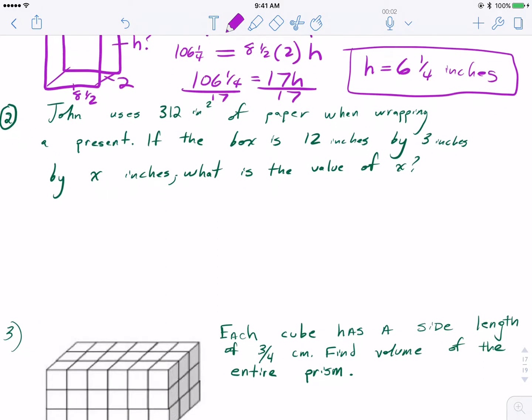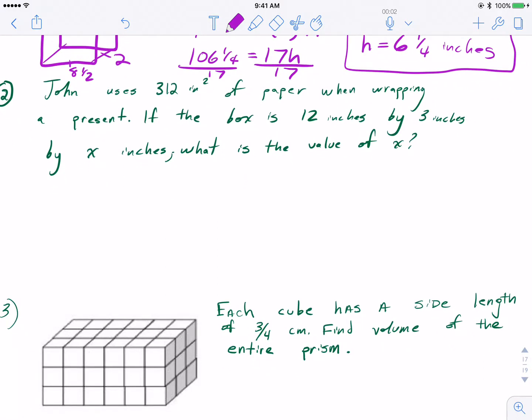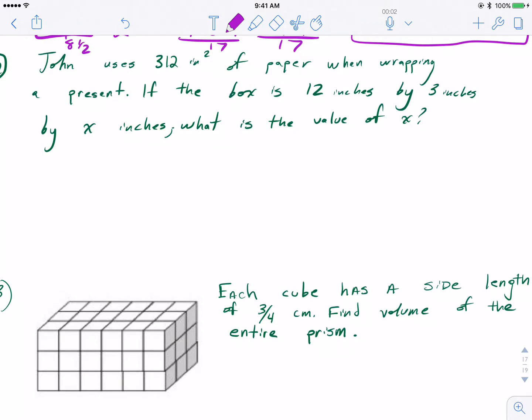For number two, it says John uses 312 square inches of paper when wrapping a present. If the box is 12 inches by 3 inches by x inches, what is the value of x? So in this case, we're looking at surface area. We're talking about outside of the box, literally wrapping paper, and also the fact that it says square inches should cue us into something.